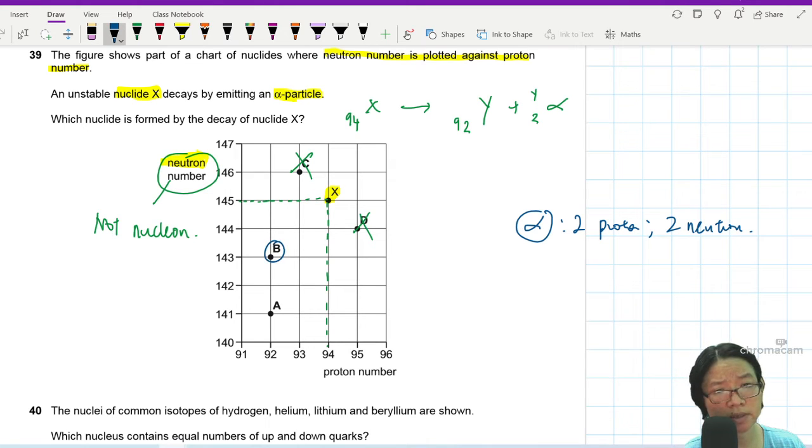So the answer will be B. You go down here to here. You go here to here. You minus 2 proton. You go here to here. You minus 2 neutron.